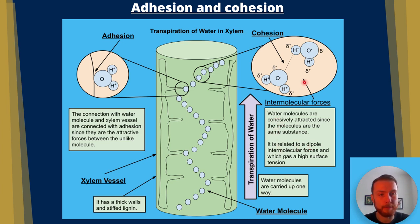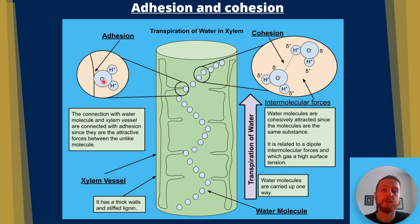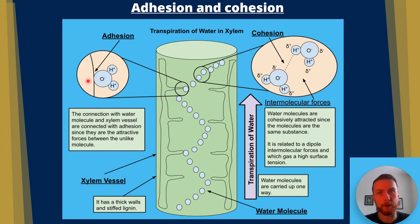Cohesion is related to a dipole — water has a negative end and a positive end, di meaning two, pole meaning the charge. It's related to intermolecular forces in which water has a high surface tension, so water molecules get dragged upward. Adhesion is where two different things are stuck together — like superglue being called an adhesive — and that's where water sticks to the xylem, explaining the formation of water droplets on things like windows.